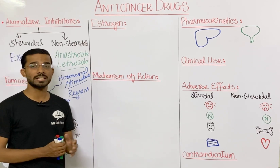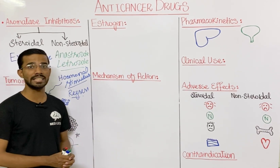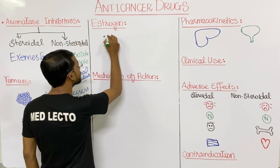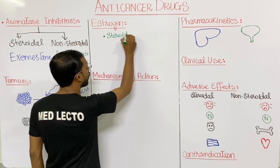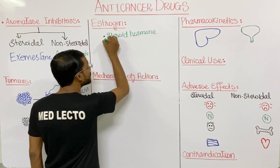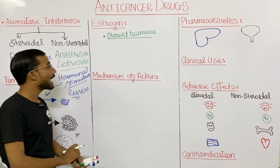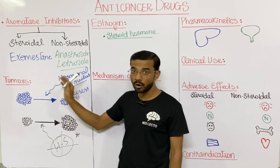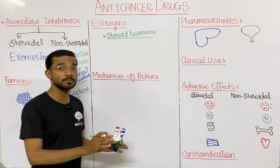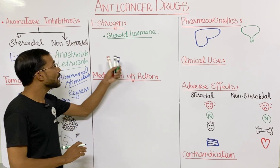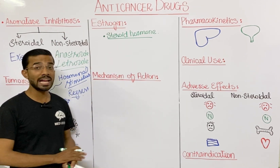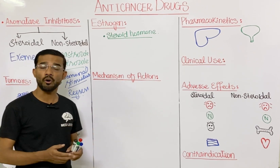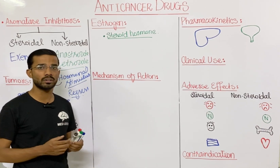First, let's discuss the general aspects of estrogen. Estrogen is basically a steroid hormone. Don't get confused between the drugs — which can be either steroidal or non-steroidal in nature — and the hormone itself. Estrogen is produced from different organs in the body, such as the ovaries, testes, adrenal gland, and other organs.